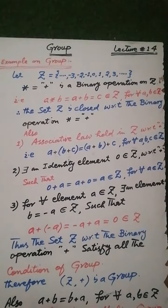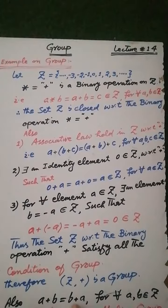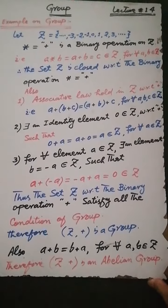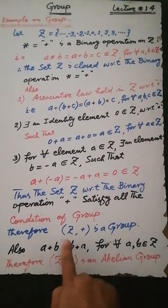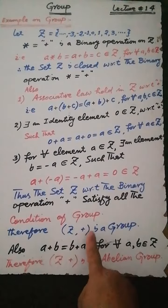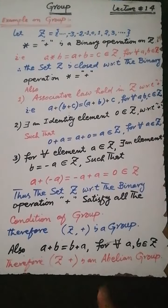Also, the set Z of all integers satisfies the condition that a plus b is equal to b plus a for each a, b in Z — that is, if a and b are any two integers, then a plus b is equal to b plus a. Therefore the group Z with respect to the binary operation addition is an Abelian group, or a commutative group.